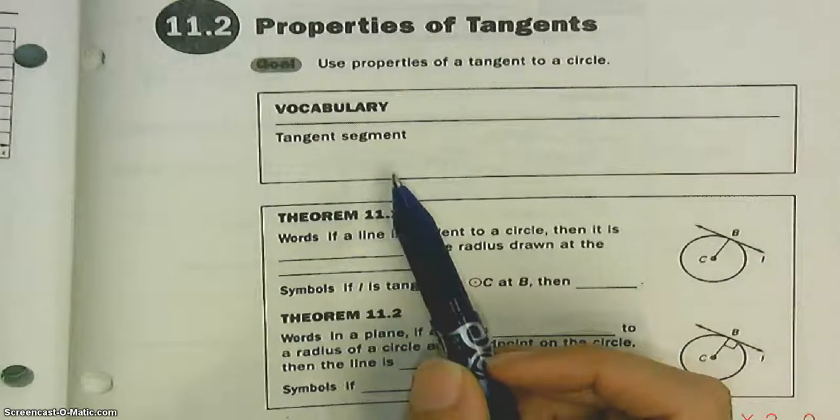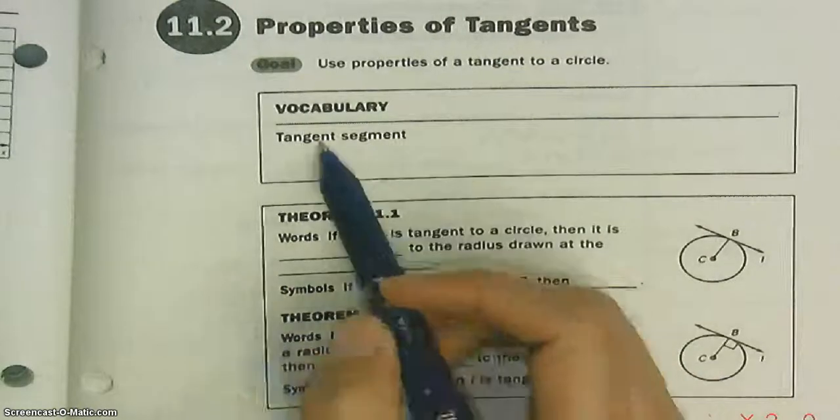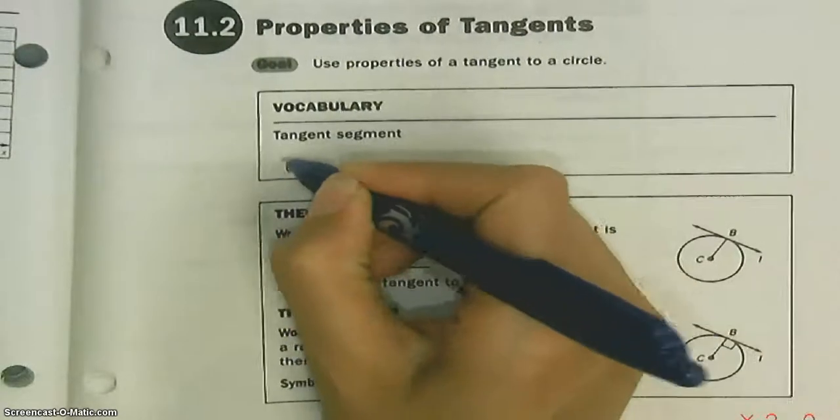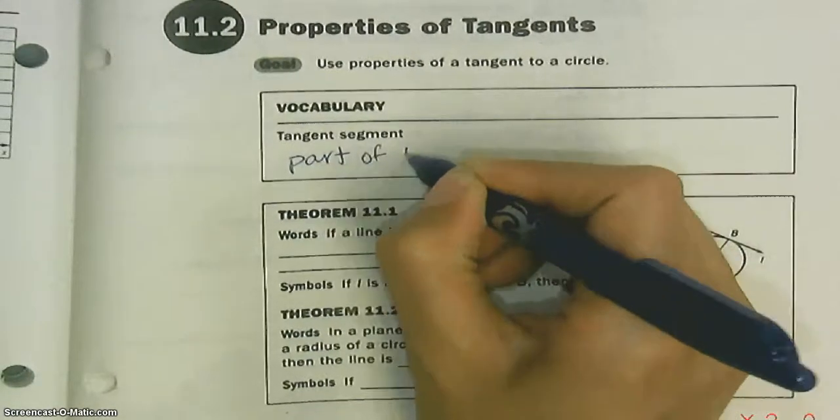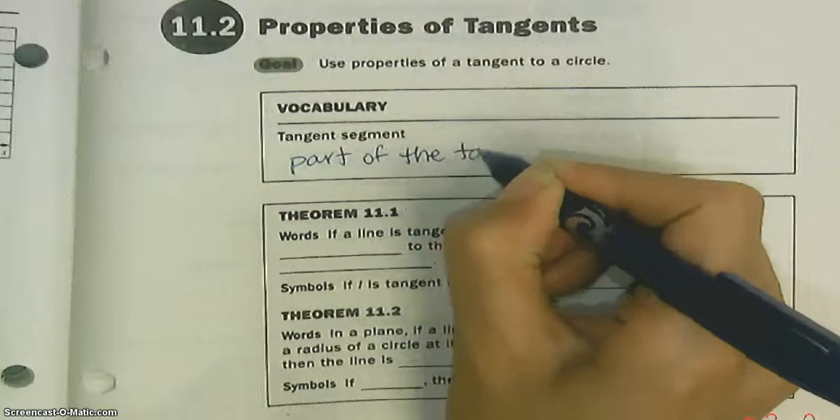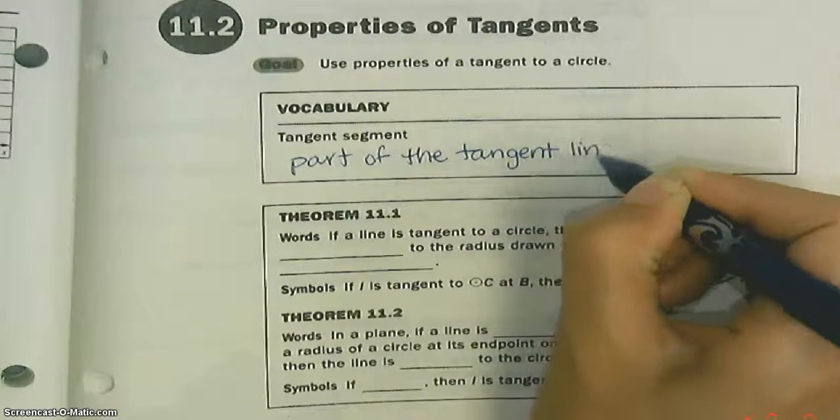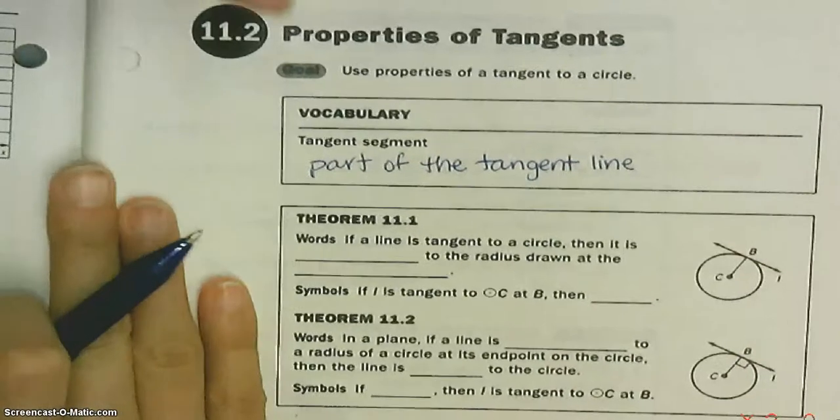We're going to talk a lot about tangent segments. Normally, a tangent is a line, but today we're going to talk about a tangent segment, which is part of the tangent line. Instead of it going on forever, it's going to stop.